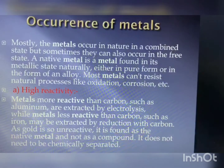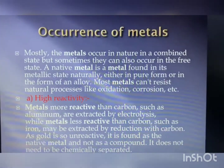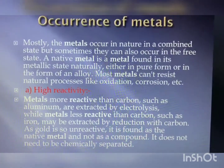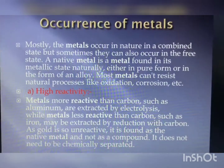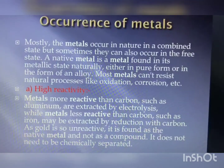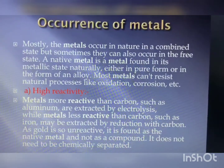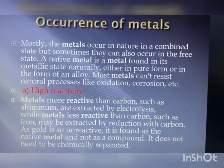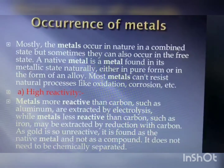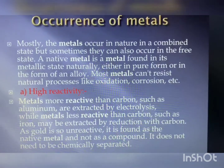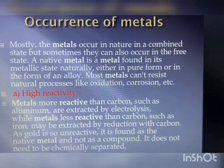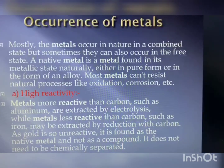Some metals are found in the earth's crust in the free state, while some are found as compounds. Metals at the bottom of the activity series are the least reactive and are often found in the free state — for example, gold, silver, platinum, and copper. Copper and silver are also found in the combined state as sulfide or oxide ores. Metals at the top of the activity series — potassium, sodium, calcium, magnesium, and aluminum — are so reactive that they are never found in nature as free elements.